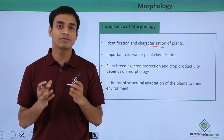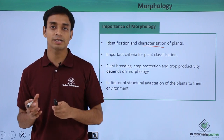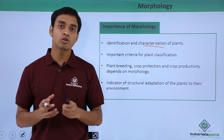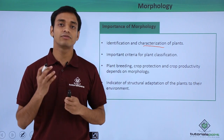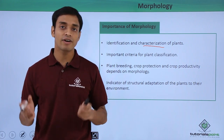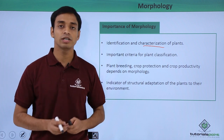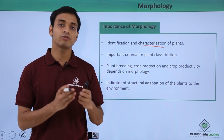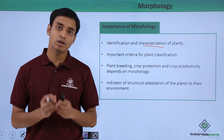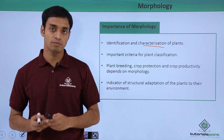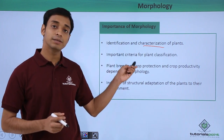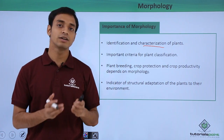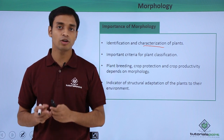Plant breeding is a technique where we use different types of plants in order to increase productivity and achieve different advantageous characteristic features in a desired plant. This type of plant breeding has been possible because of the study of morphology.